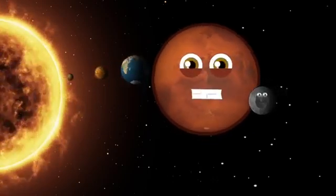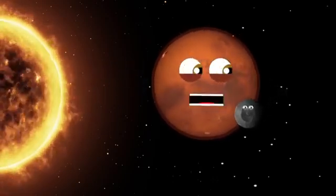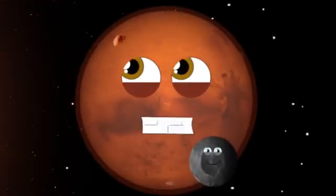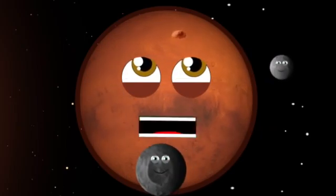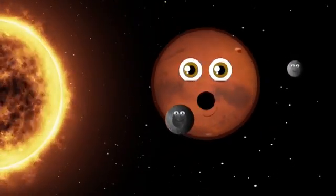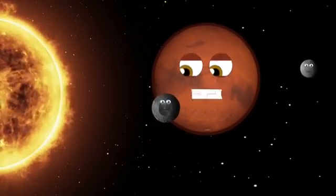On the fourth planet from our burning sun, and the second smallest planet in our solar system, I have the tallest mountain named Olympus Mons. It's the biggest volcano in our whole system. Phobos and Deimos are my two moons.